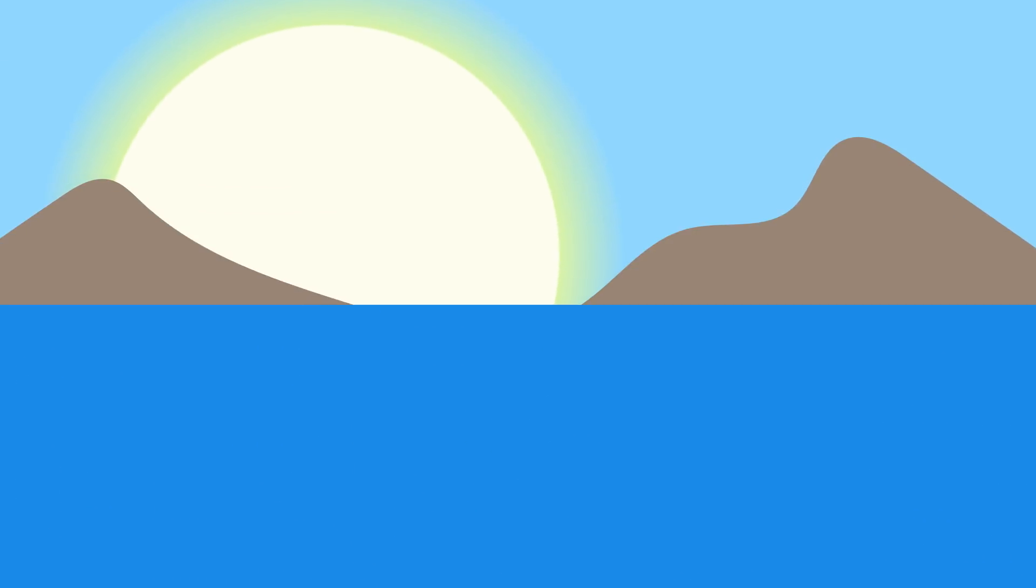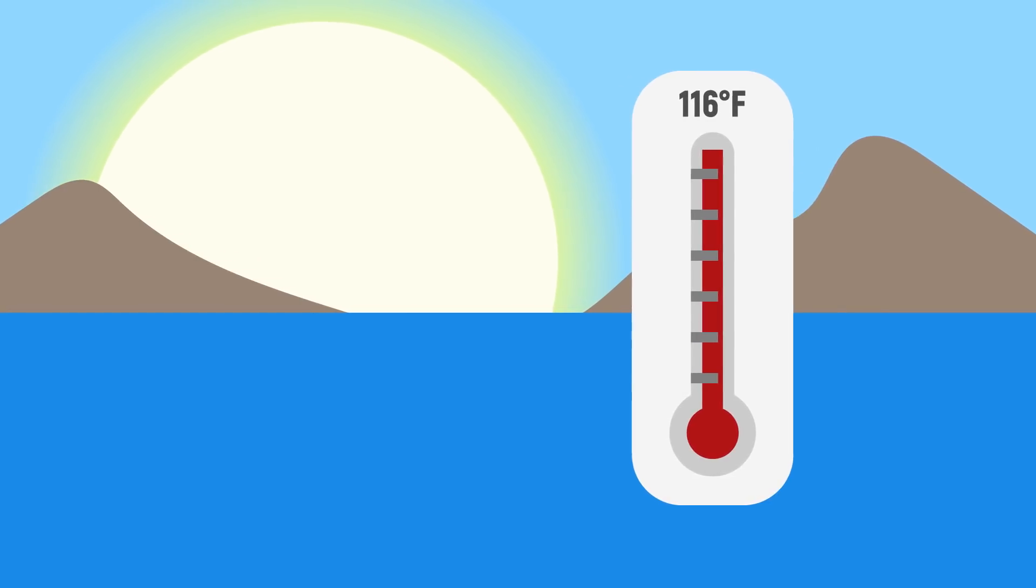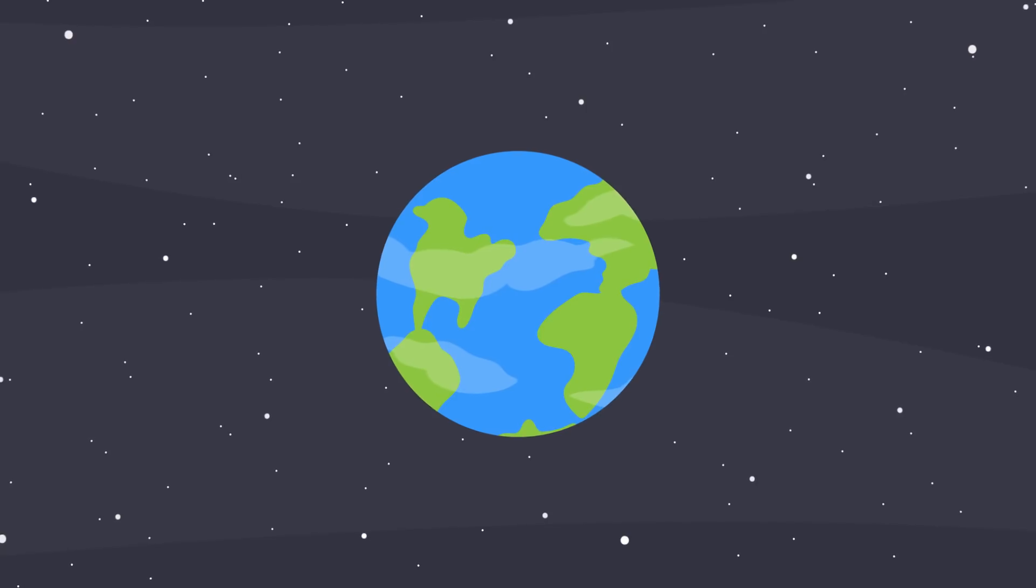By this time, the sun is 10% more luminous than it is now, and the surface temperature on Earth is 116 degrees Fahrenheit on average. This will cause the oceans to evaporate, filling the atmosphere with water vapor, causing an extreme greenhouse effect.